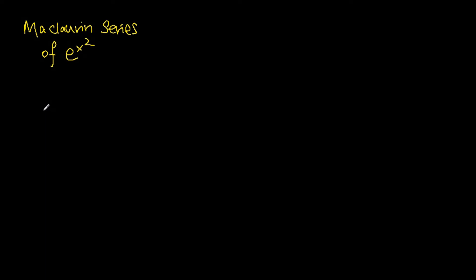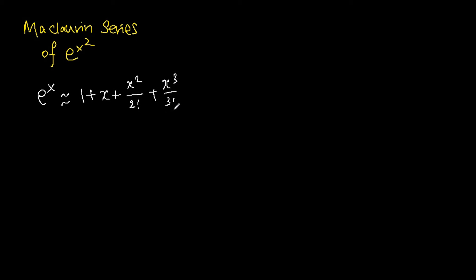To find the Maclaurin series of e to the power of x squared, we can use the Maclaurin series of e to the power of x. We know that e to the power of x is approximated as 1 plus x plus x squared over 2 factorial plus x cubed over 3 factorial plus x to the power of 4 over 4 factorial. This expresses the Maclaurin series of e to the power of x up to and including the x to the power of 4 term.